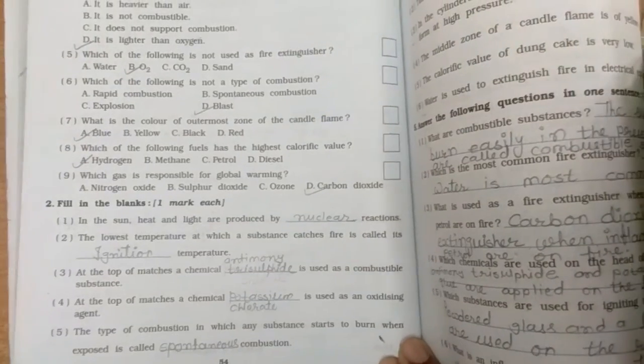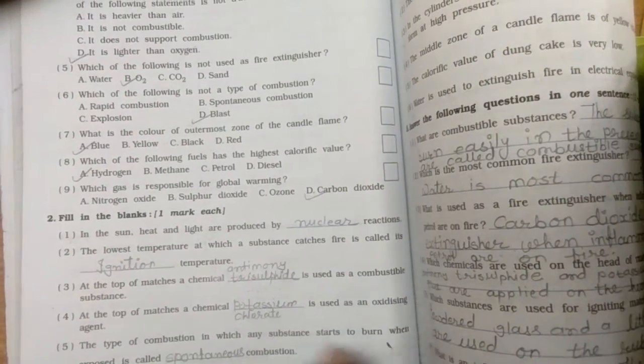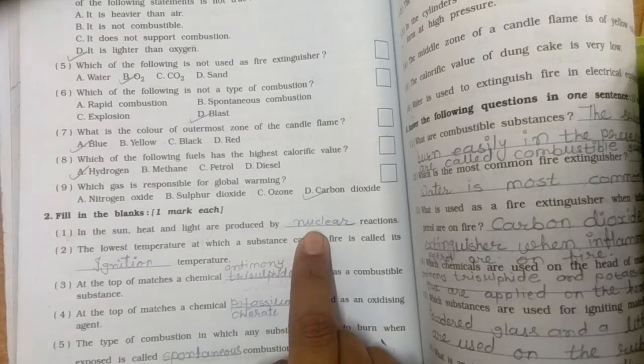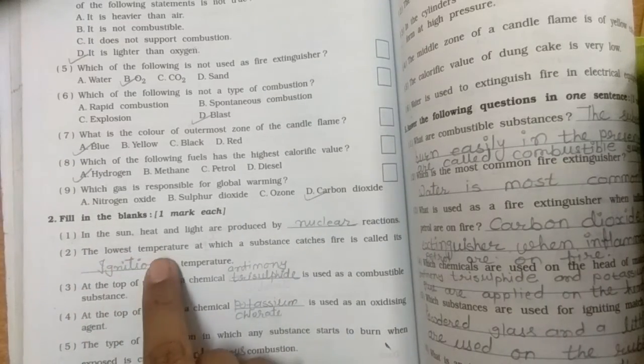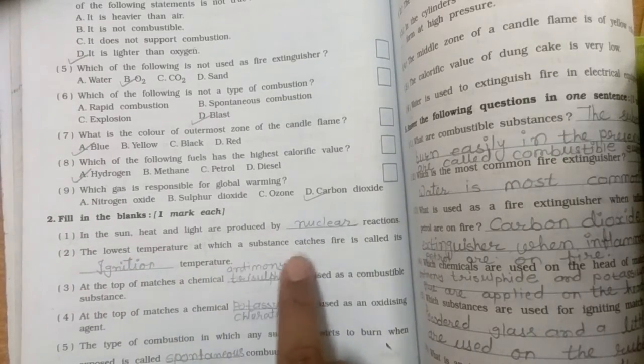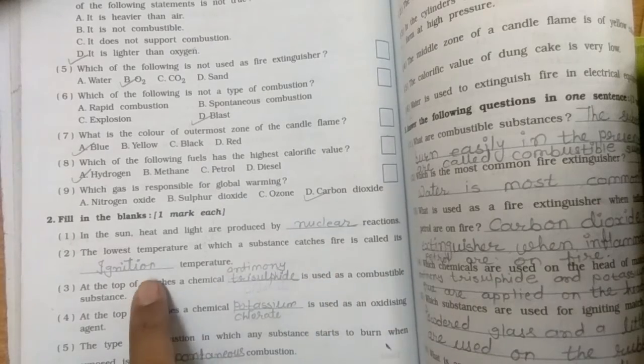Question number 2. Fill in the blanks. First, in the sun, heat and light are produced by nuclear reaction. Second, the lowest temperature at which a substance catches fire is called its ignition temperature.